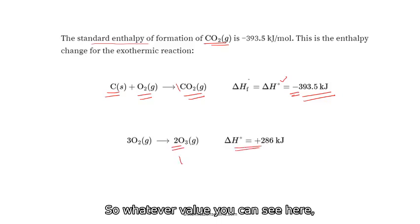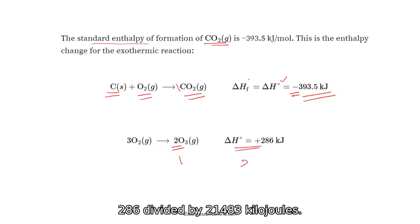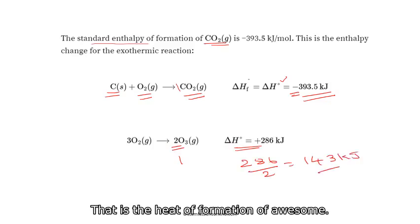Now in this case, you can see ozone is formed from oxygen, but there are two moles here. So we need for one mole. So whatever value you can see here, half of that we will take for one mole. So that will be 286 divided by 2, 143 kilojoules. That is the heat of formation of ozone.